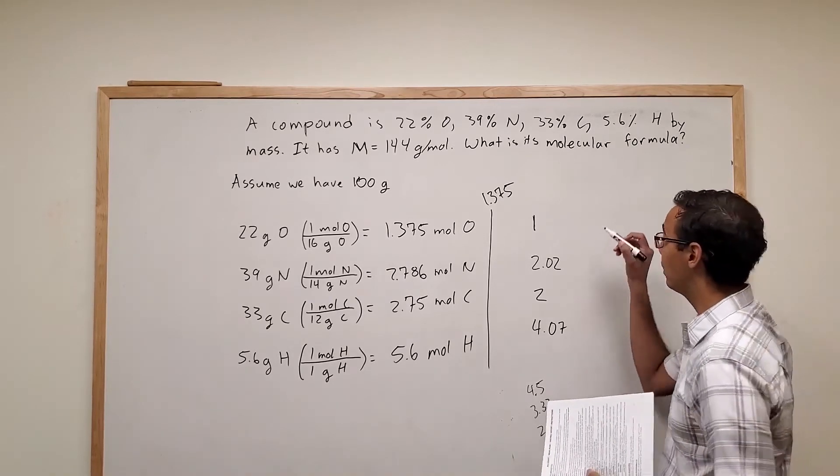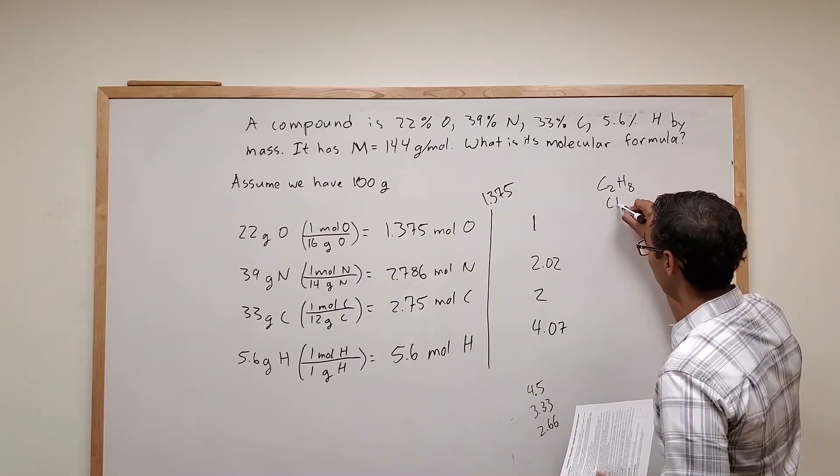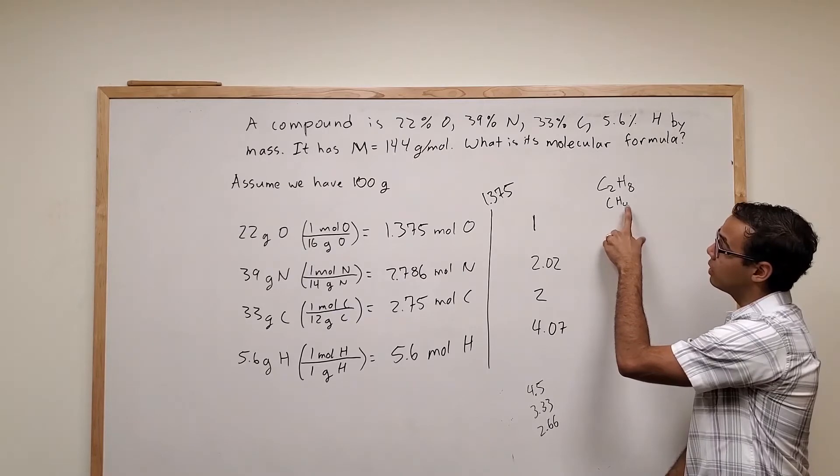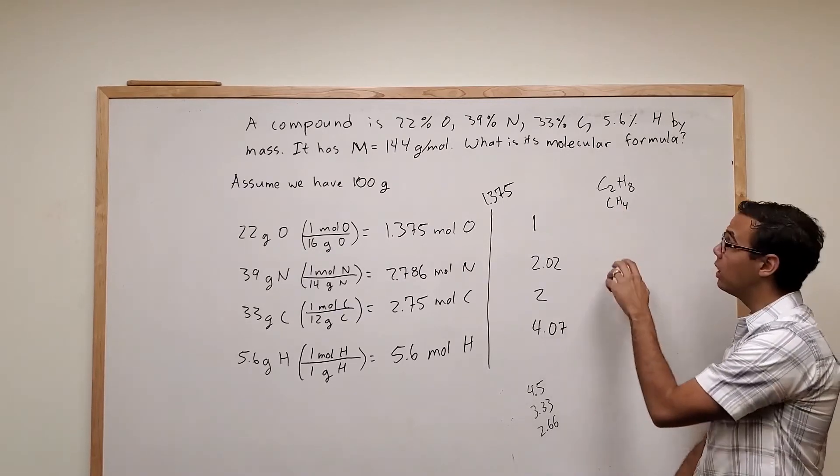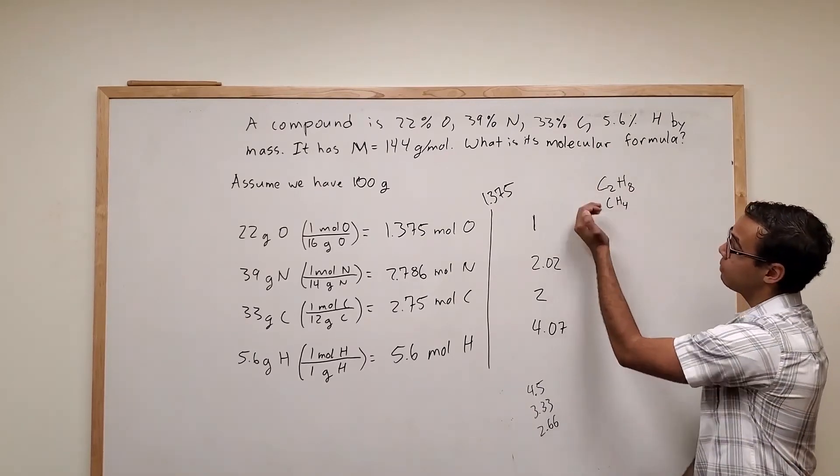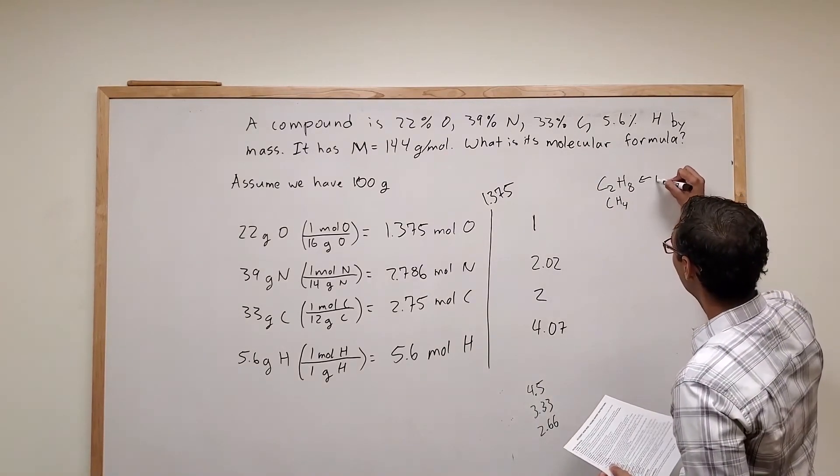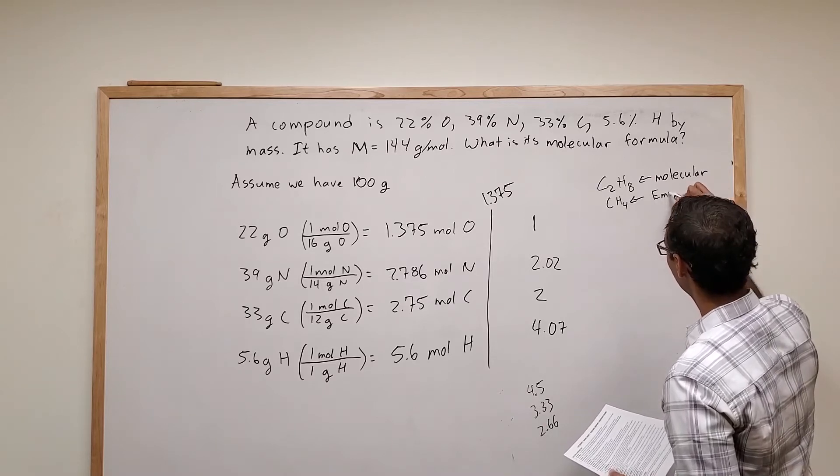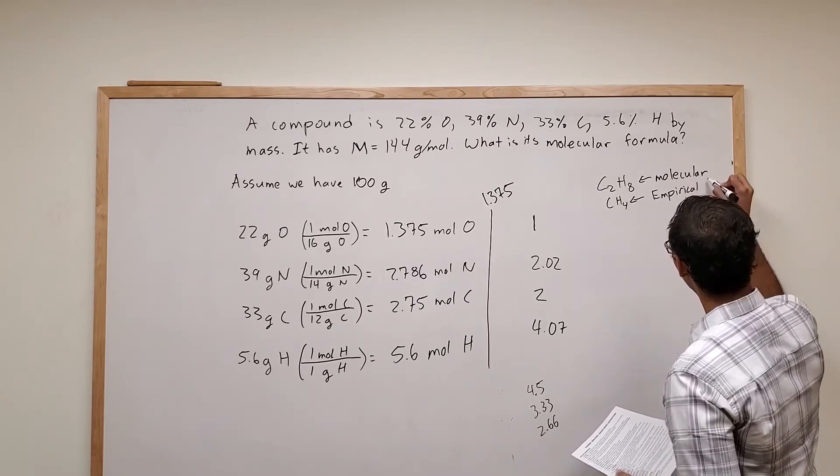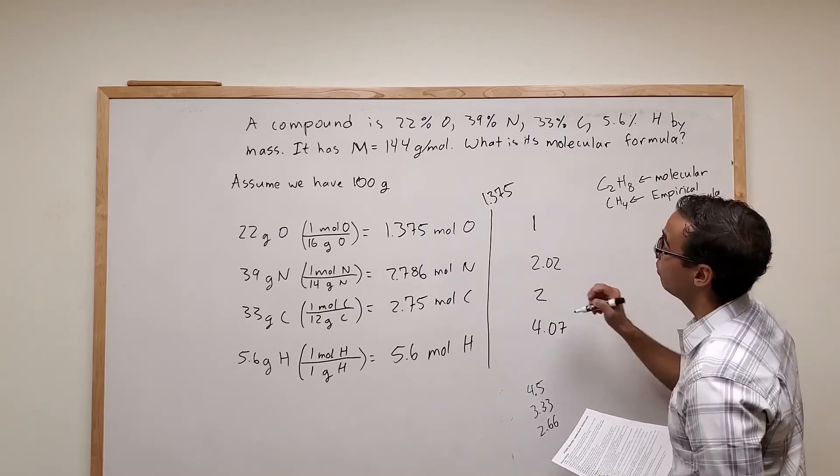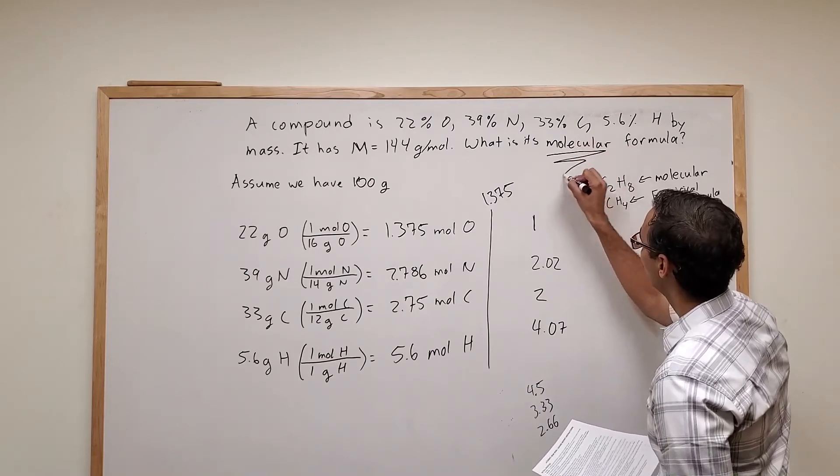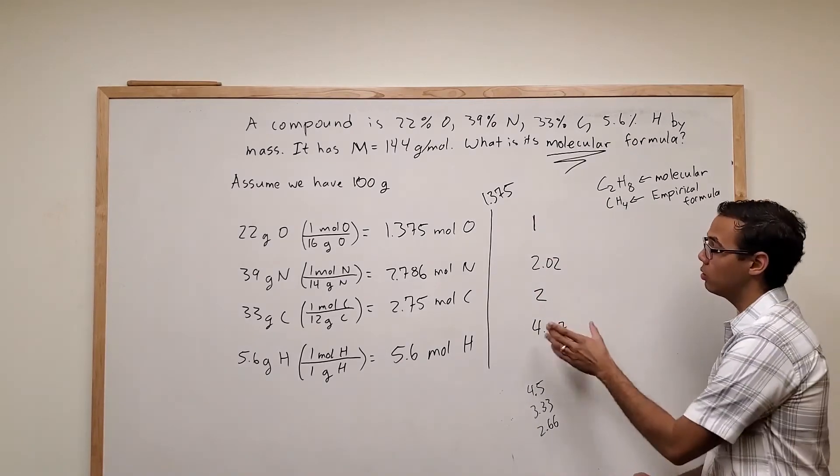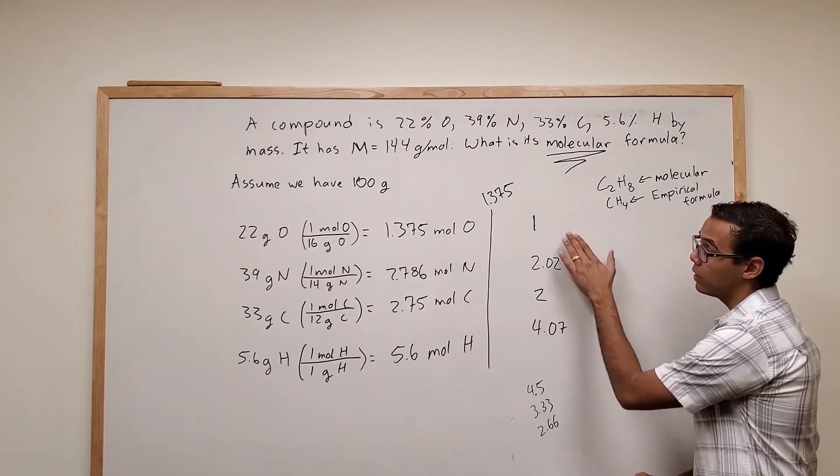So for instance, if you had C2H8, the empirical formula would be CH4. Because the ratio of hydrogens to carbons is still 4 to 1. And 1 and 4 are both integers, but both of these are smaller than 2 and 8. So this would be the molecular formula, whereas this one would be the empirical. But notice what we're looking for. We're looking for molecular. So we're looking for this more complicated one. But what we're doing right now is just giving us the most simple, straightforward integer values of the ratios between elements.